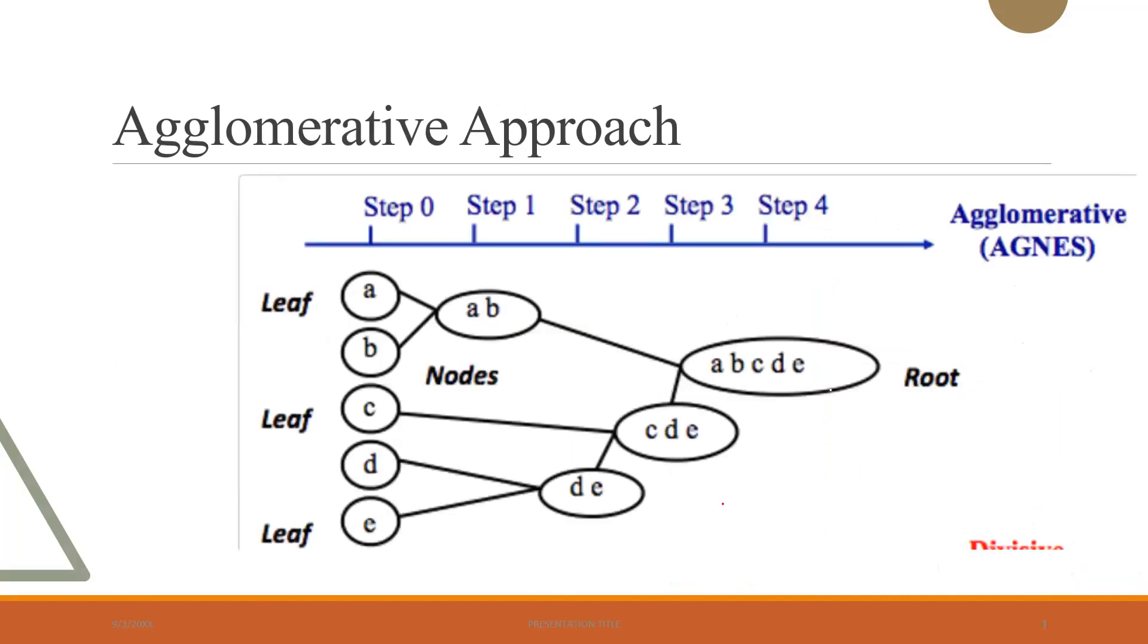Now, let's deep dive into the concept of agglomerative approach with an example. We follow the same bottom-up approach. We start by assuming each individual object as a single cluster. So here, A, B, C, D, and E are considered as individual objects in this step. At step 0, let's say we have N as the number of clusters. So as we have five clusters, the value of N is 5.